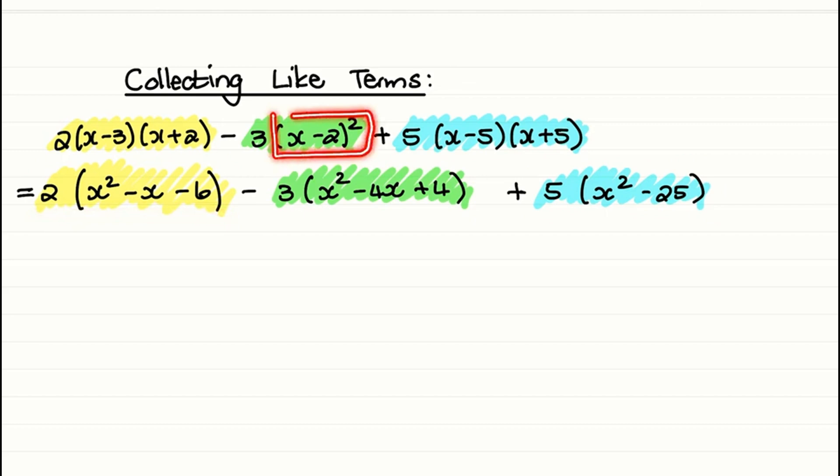And when we expand (x-2) squared, we are left with -3 multiplied by (x² - 4x + 4). And when we expand (x-5)(x+5), we are left with 5 times (x² - 25).